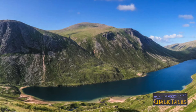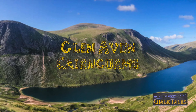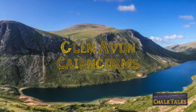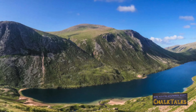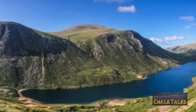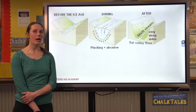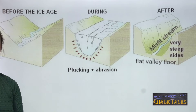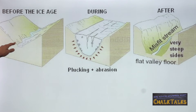A further glacial feature you need to explain is a U-shaped valley. This is Glen Avon in the Cairngorms — a great example with a ribbon loch and a hanging valley. To start your explanation, you could explain how the glacier moves downhill under gravity on a layer of meltwater between the ice and the bedrock. It tends to follow a V-shaped river valley as it's the easiest way downhill.